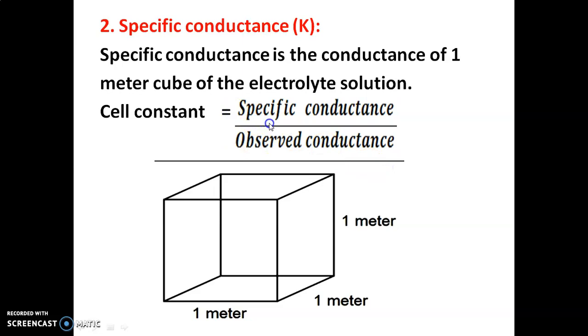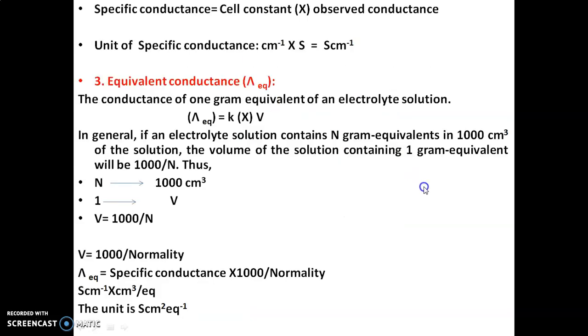The relationship is: cell constant equals specific conductance divided by observed conductance. Therefore, specific conductance equals cell constant multiplied by observed conductance.